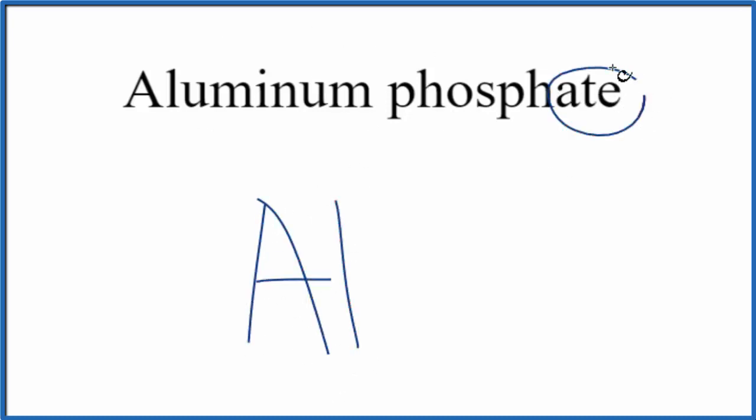When we look at phosphate, this A-T-E at the end, that should alert us to the fact that this is a polyatomic ion. So you're not going to find it on the periodic table.